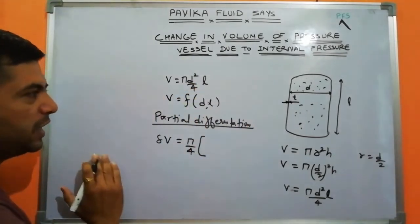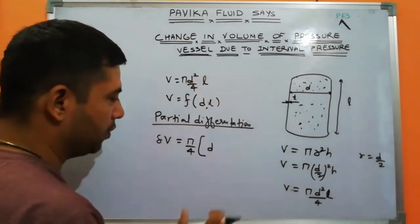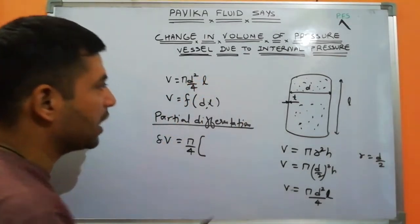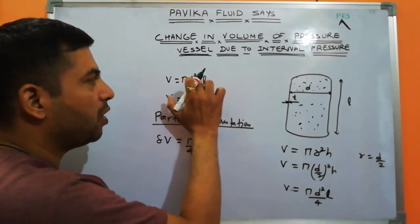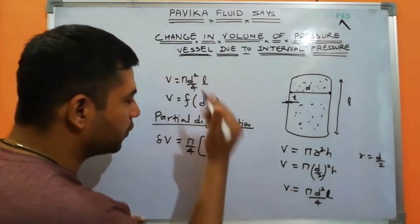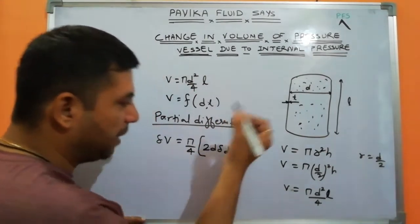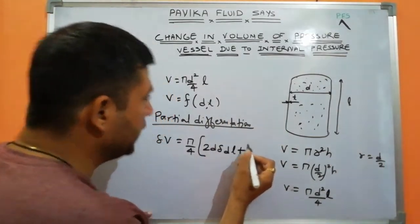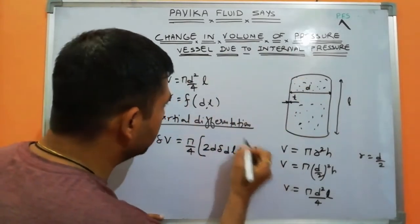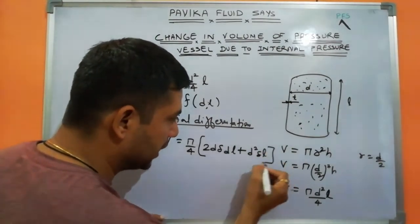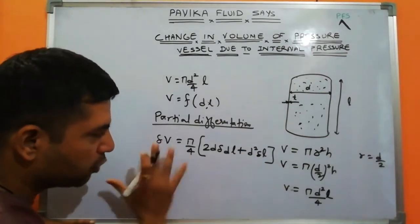We have two parameters: d² and l. First, keep l constant and differentiate d²: that gives 2d·δd·l. Then keep d² constant and differentiate l: that gives d²·δl. Now divide both sides by the original volume V.